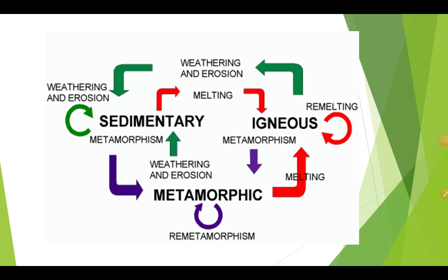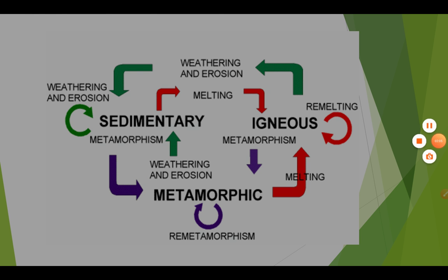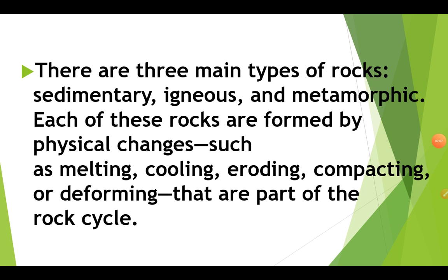This is a chart of the rock cycle. Sedimentary rock, for example, melts and turns into igneous rock. Igneous rock turns into metamorphic rock through the process of metamorphism. Then again, through metamorphism, it is converted into sedimentary rock. This is how the rock cycle works.